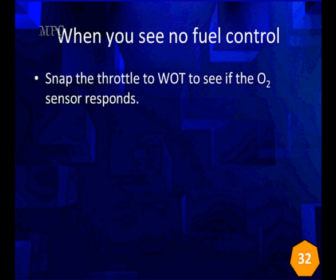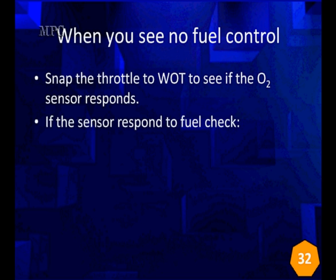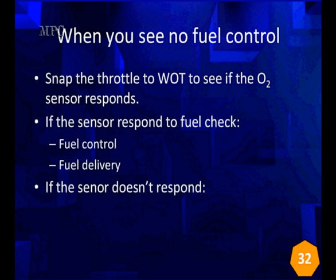Snap the throttle wide open to see if the O2 sensor responds. What should happen? Well, first of all, we'll get enrichment and go full rich. If we can respond quickly, go to fuel control. Is the calculation right? Go to fuel delivery. Can you deliver the fuel to the injector when it's opened the proper amount? Or do you have to add a bunch of long-term fuel trim in to overcome low fuel pressure, dirty fuel filters, weak fuel pump, dirty fuel injectors? Do you have to add fuel in to overcome mass air flows that are dirty? Or any other of the sensors that are critical to fuel control? If the sensor doesn't respond, it's easy. Change the sensor.